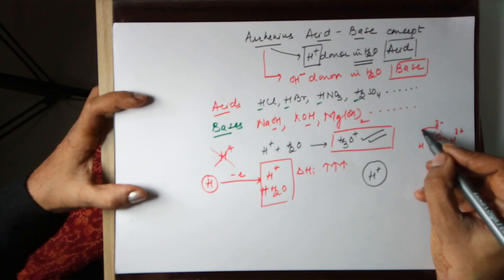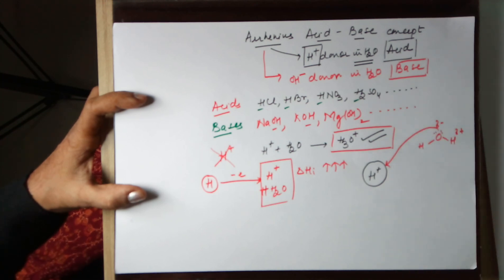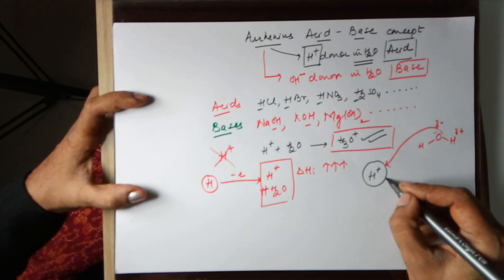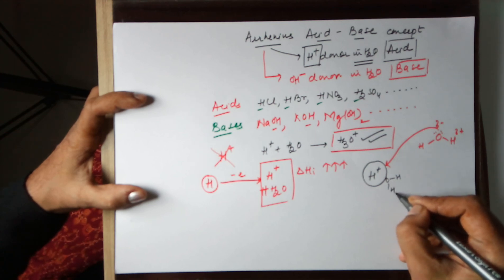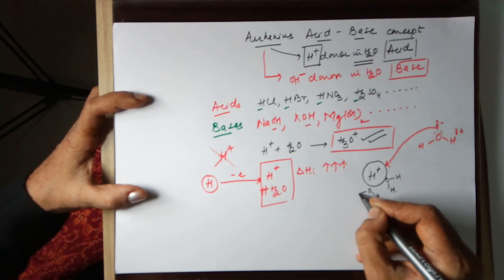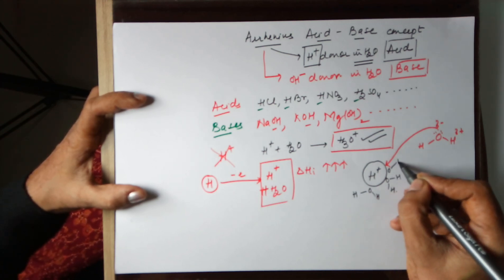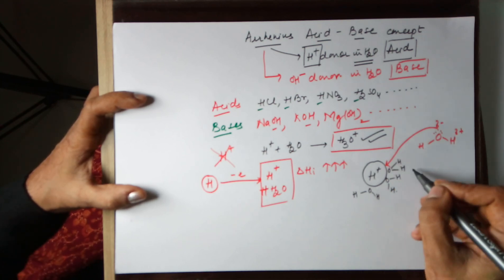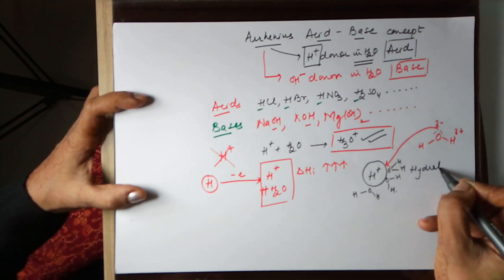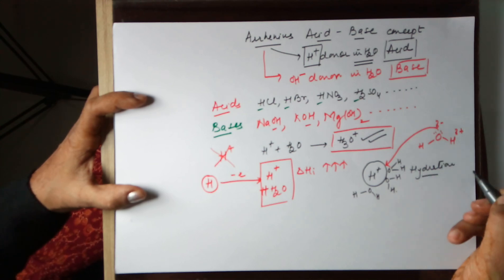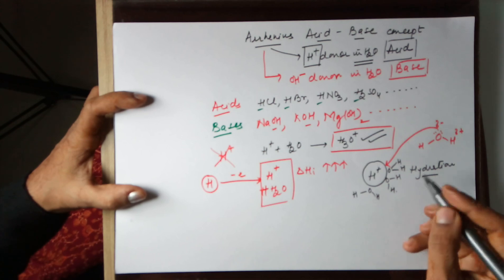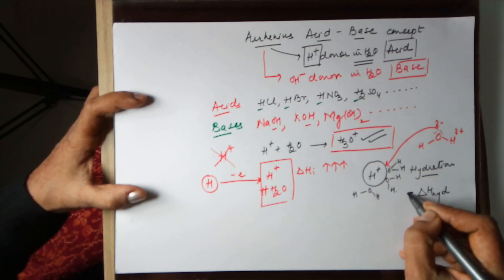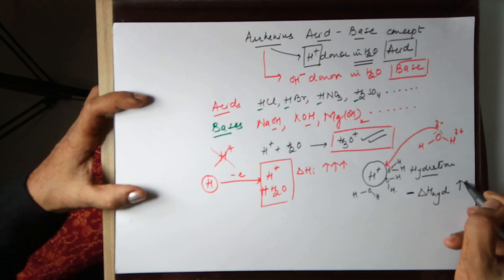H+ therefore is attracted by the oxygen of water molecules. Hence, you have water molecules attracted towards H+ like this. This is called hydration. This attraction between water molecules and H+ ion leads to loss of energy, which is your hydration energy. This value is always negative and also high.